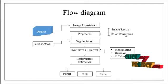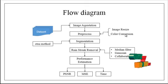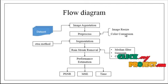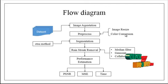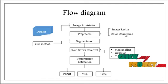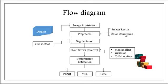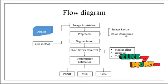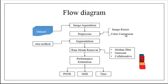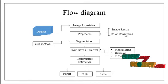After rain streak removal, we move on to the final stage: performance estimation. We have three performance metrics — PSNR, MSE, and time. Time refers to how much time is taken to execute the overall process. PSNR stands for Peak Signal-to-Noise Ratio, and MSE represents the Mean Square Error.